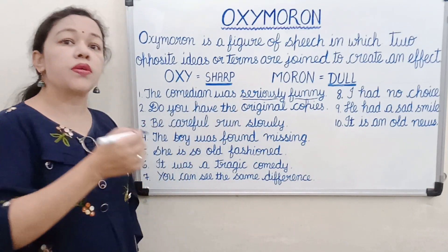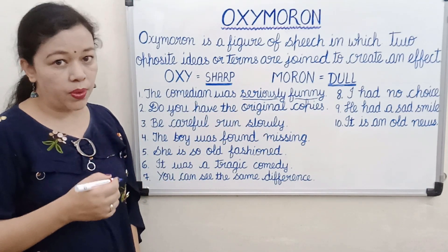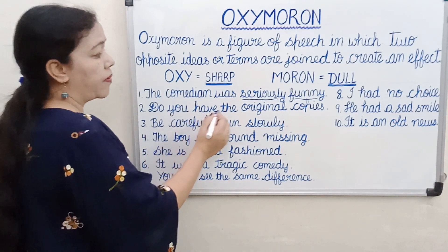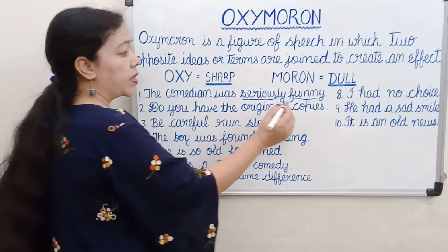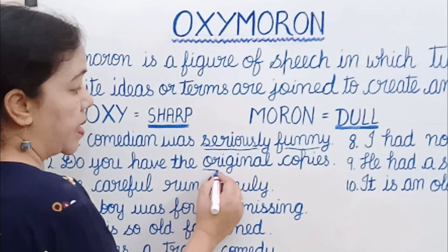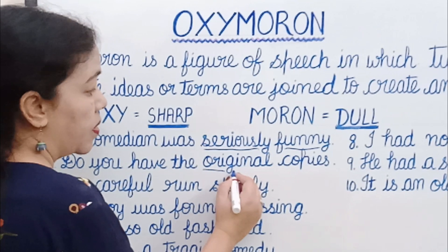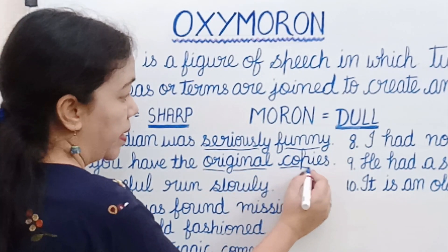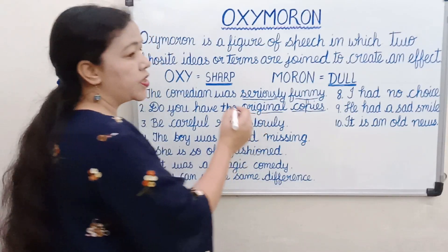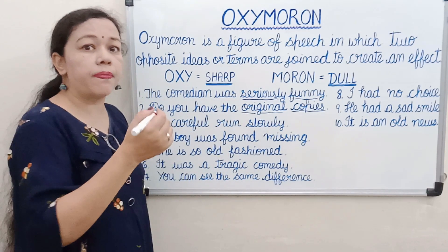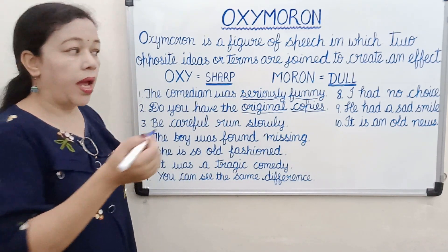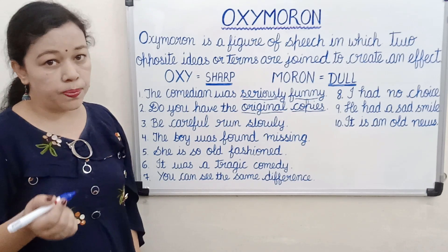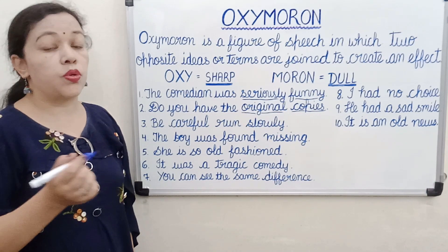Next sentence: 'Do you have the original copies?' In this sentence, original and copies are opposite — original means something which is real and copies means something which is duplicate. So both are opposite words coming together in a sentence, making it an oxymoron.